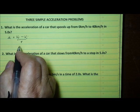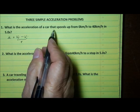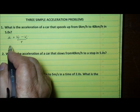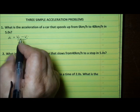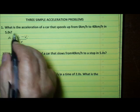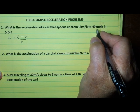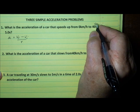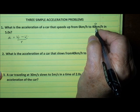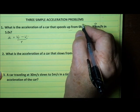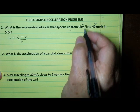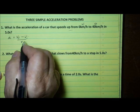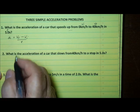Let's take a look at our first question. What is the acceleration of a car that speeds up from zero kilometers per hour to 40 kilometers per hour in five seconds? The first thing we have to do is identify the three variables in the equation. The final velocity would be 40 kilometers per hour, and we can label that as v sub f. The initial velocity is zero kilometers per hour, labeled v sub i. And the time is 5.0 seconds, labeled t.